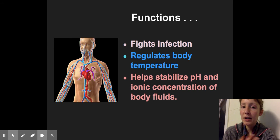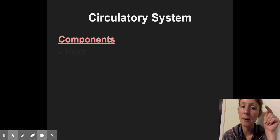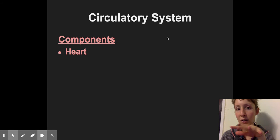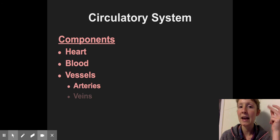And the cardiovascular system also helps stabilize the pH and ionic concentrations of body fluids. Now, the circulatory system has some main components. So the main pump of the system is the heart. Then we've got the blood that is flowing through all of the vessels. And those vessels can be broken down into arteries, veins, and capillaries.